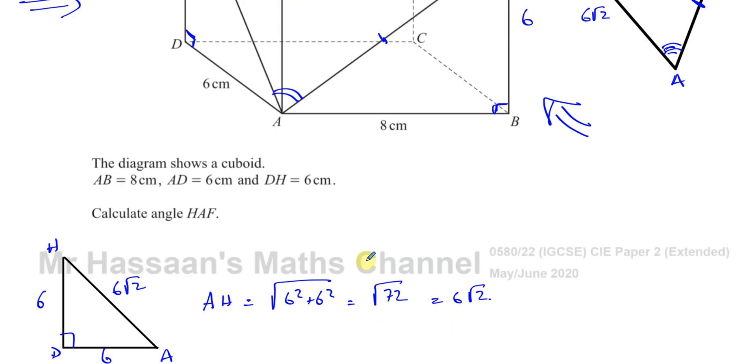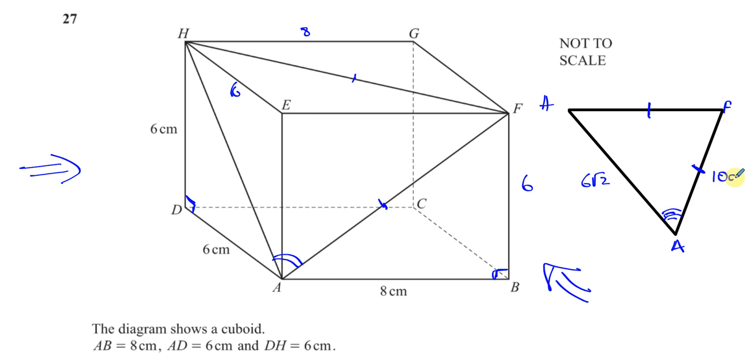So AF is 10 centimeters. And as this also is the same triangle, this is basically the same dimensions. This is a right angle. This is 8. This is 6. So you'll see a triangle that looks exactly like this. That's H, that's F, that's E, that's 8, that's 6. So this is also going to be 10. So this is also 10 centimeters.